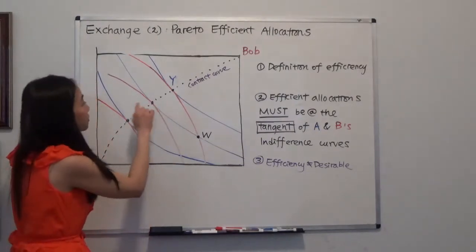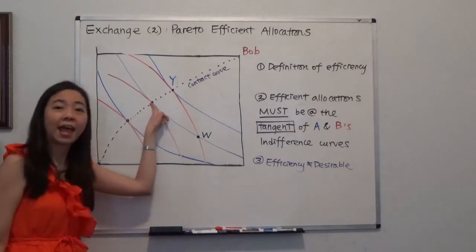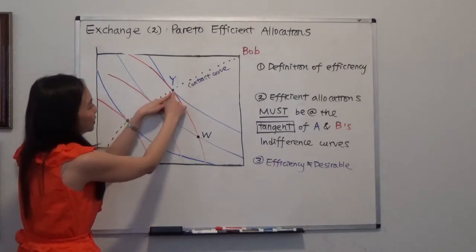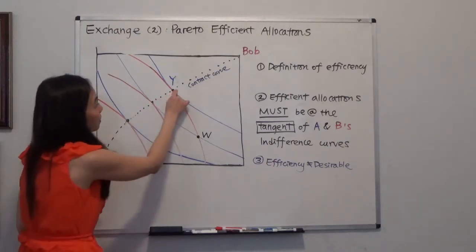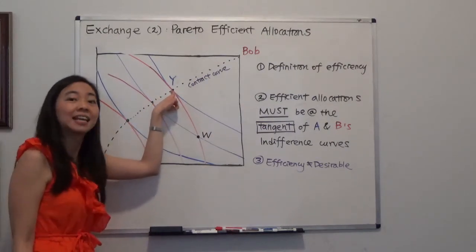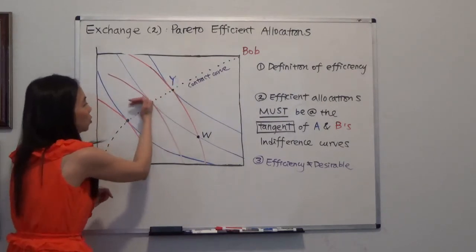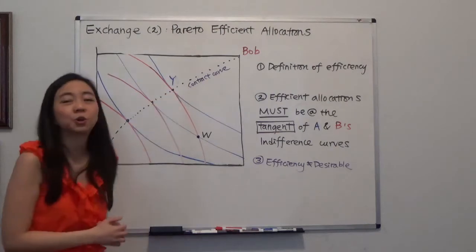So for example, suppose we're on this point, then for Alice to improve her utility, we must make sure that Bob's utility is going down. Then we know this point Y is efficient. Or if we're at point Y, then for Bob to improve his utility, we must be moving to this direction, and then we'll be hurting Alice's utility. So we know point Y is already efficient.